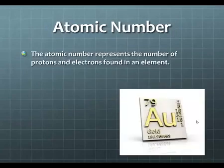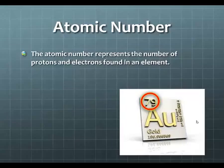Atomic number. Atomic number represents the number of protons and electrons found in an element. So inside of your notes, circle the atomic number and identify it as the atomic number.